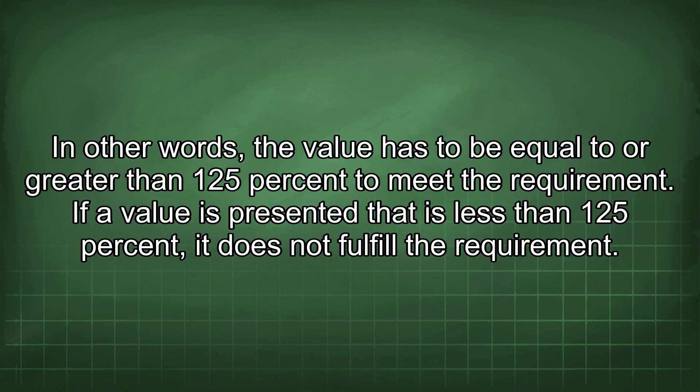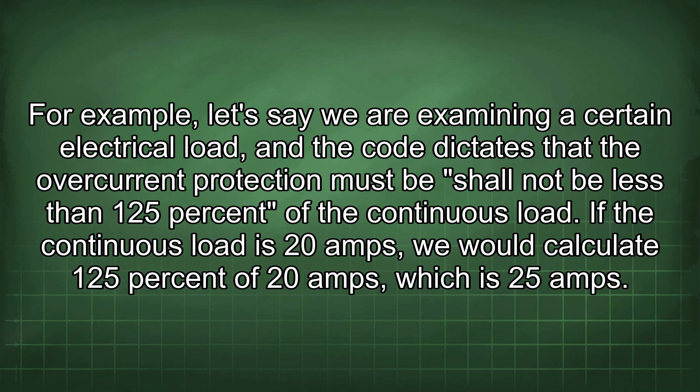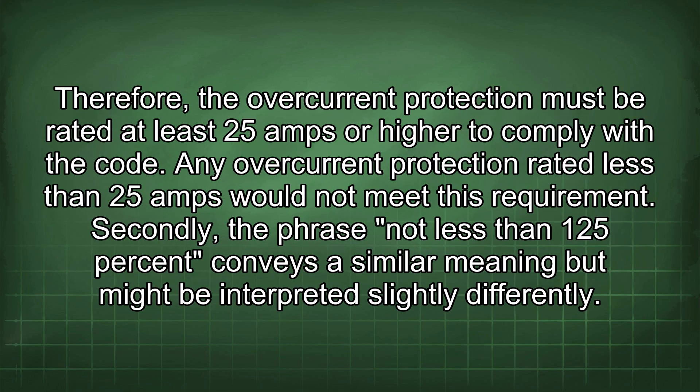If a value is less than 125%, it does not fulfill the requirement. For example, if we are examining a certain electrical load and the code dictates that the overcurrent protection shall not be less than 125% of the continuous load, and the continuous load is 20 amps, we calculate 125% of 20 amps, which is 25 amps. The overcurrent protection must be rated at least 25 amps or higher. Any overcurrent protection rated less than 25 amps would not meet this requirement.